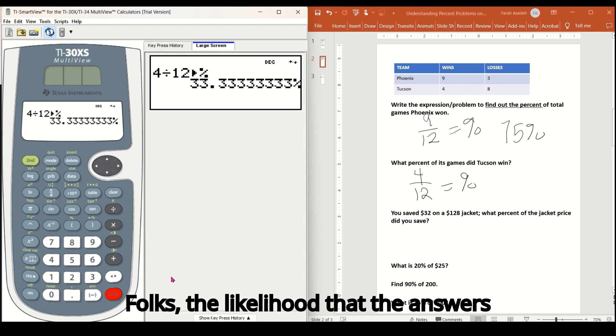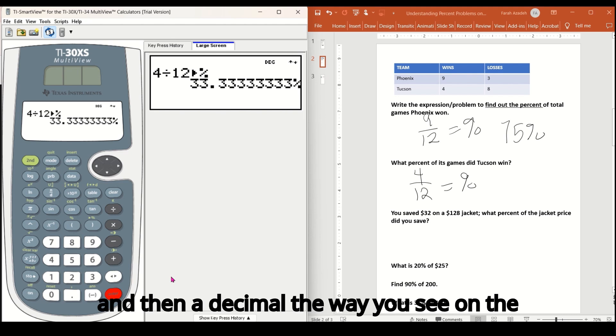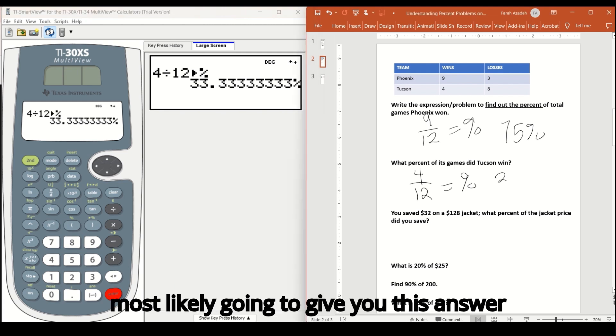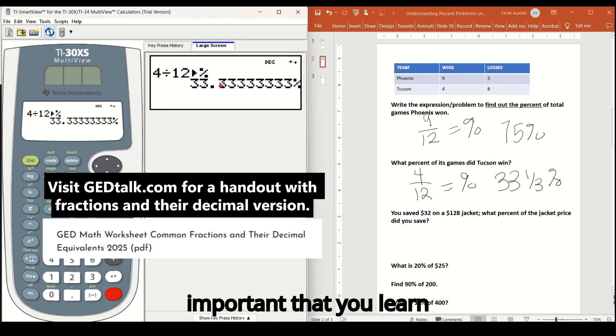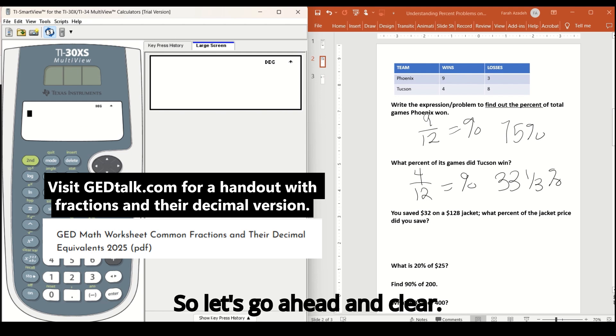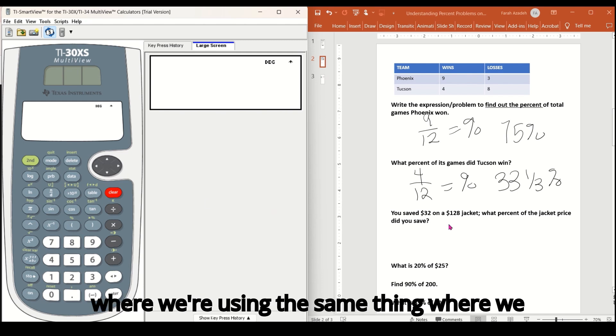Folks, the likelihood that the answers will show up as a whole number and then a decimal, the way you see on the calculator is slim to none. They are most likely going to give you this answer as 33 and one third percent. This is why it's really important that you learn what these different fractions are to their decimals. So 0.3 repeating is the equivalent of one third.